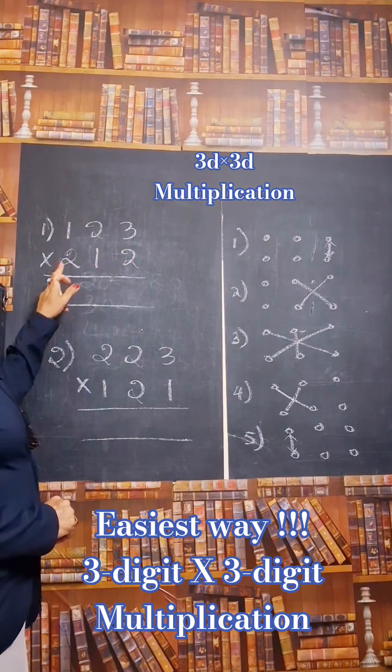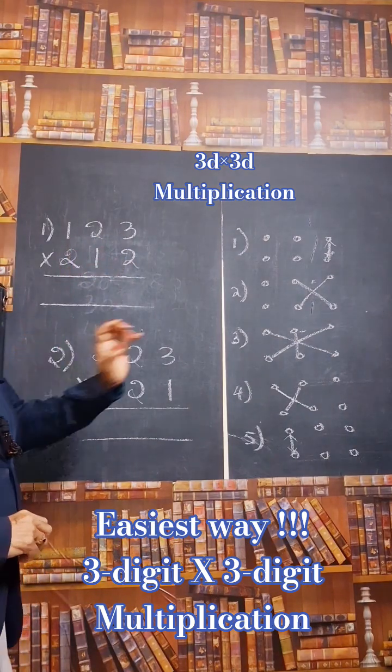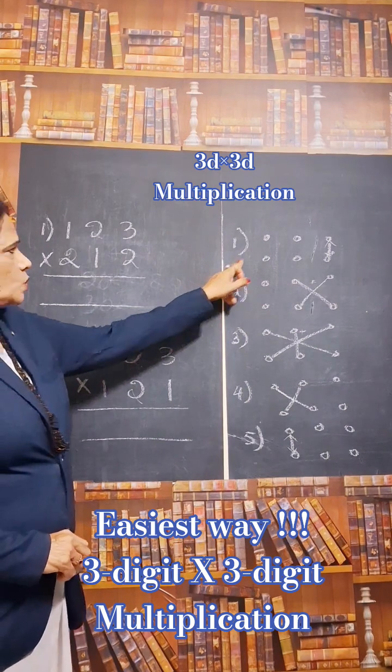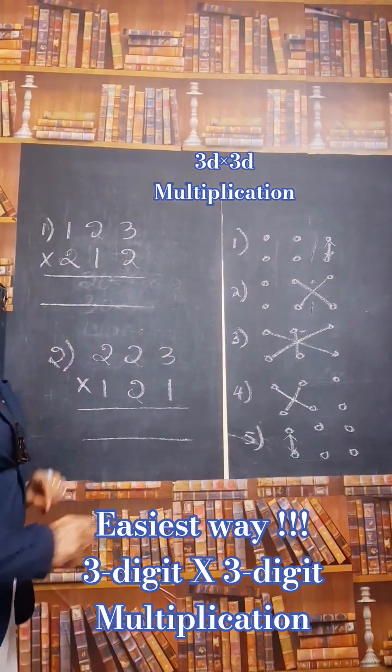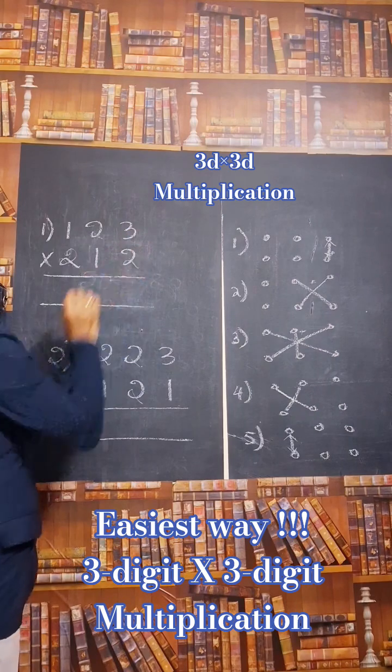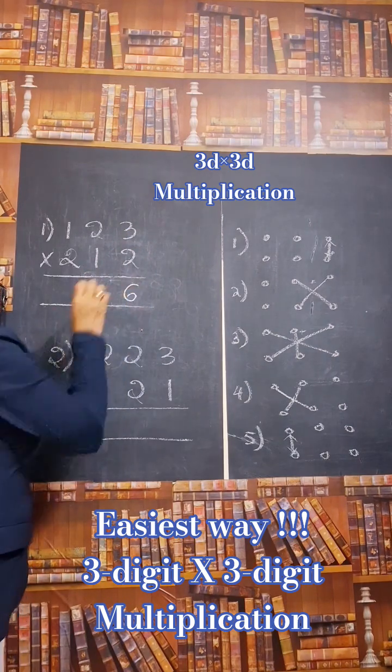123 multiplied by 212. Here are the patterns. The first one. What is the first step? Multiply only the units place number and write the answer. Multiply these two. 3 into 2. 3 into 2 is 6.